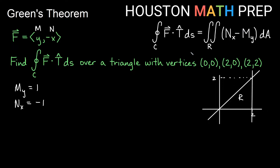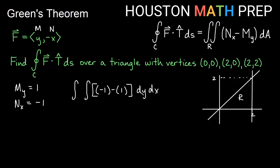So N_x is −1 and M_y is 1, giving us N_x minus M_y = −1 minus 1 = −2 as our function. This is not a round region, so we won't use polar — we'll use dy dx. For dy dx bounds: fixing an x value and drawing through in the increasing y direction, we enter the region at the horizontal axis y = 0 and exit on the diagonal line y = x. So inner bounds are 0 to x, and outer bounds are 0 to 2.